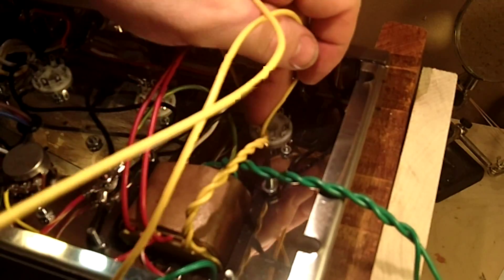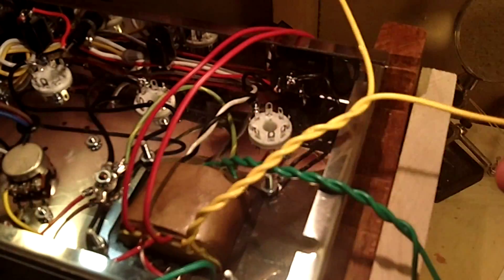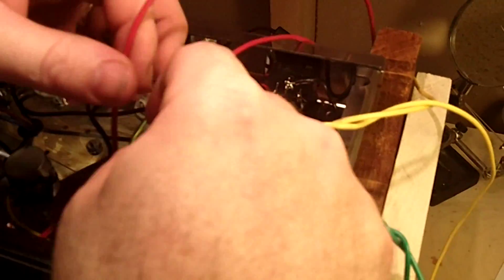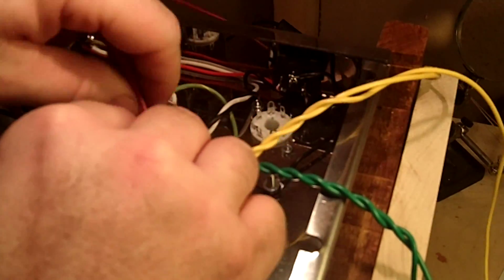And now the yellow ones go over to the rectifier tube. I'm just going to twist those out and make sure I've got it long enough to reach. And then those high voltage secondaries need to be twisted as well.